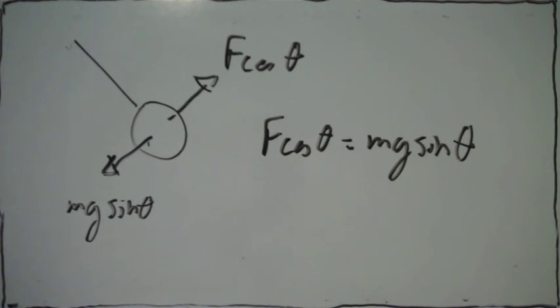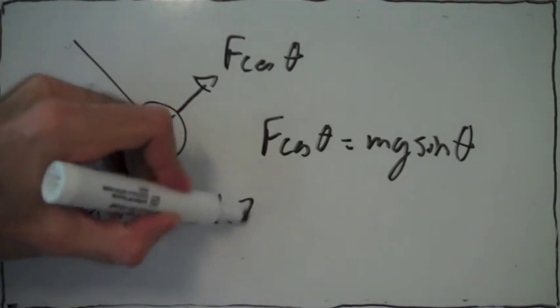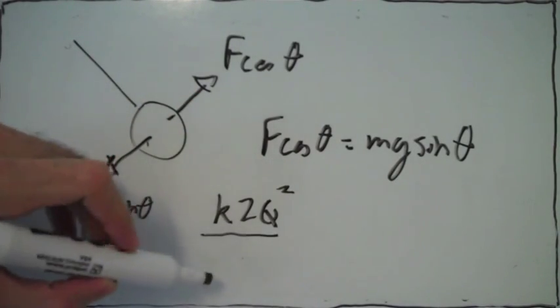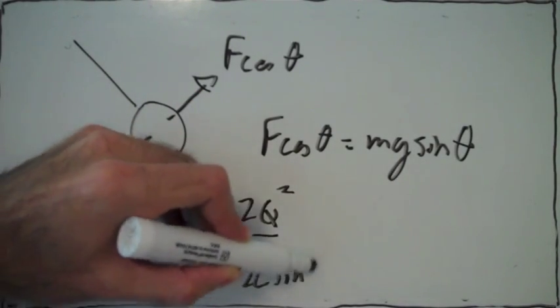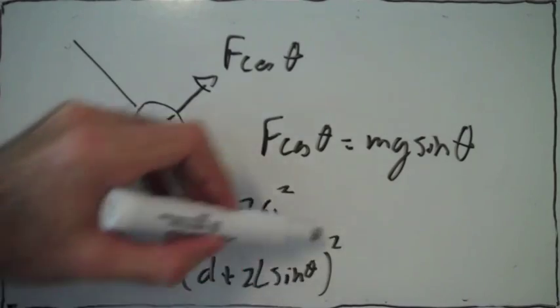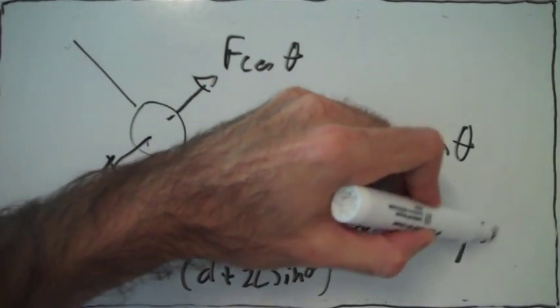And now if we write down what f is, the electrical repulsion force, we already had it from before, it's this. And then we just say that's equal to that.